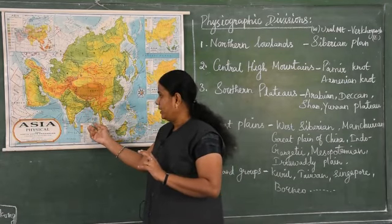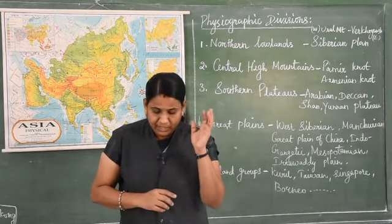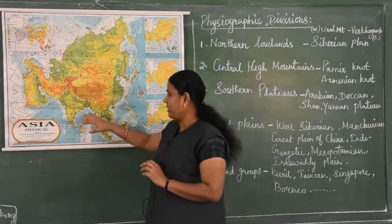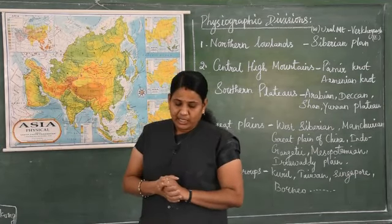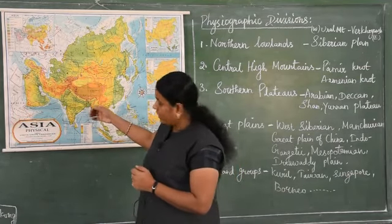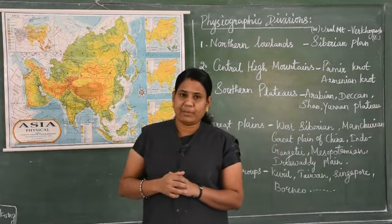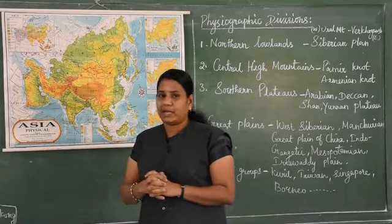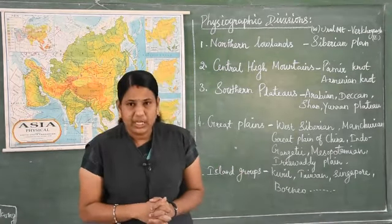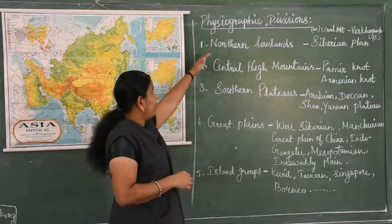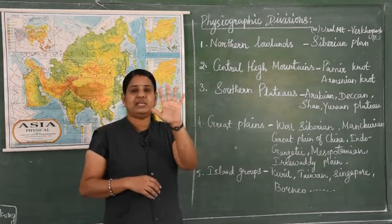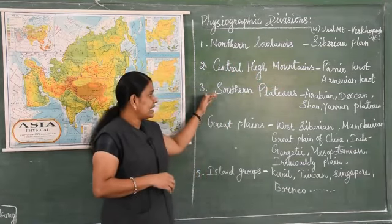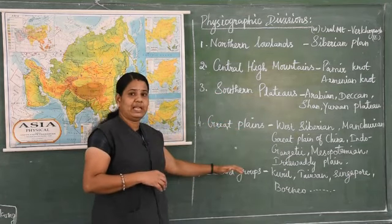If we see the Bay of Bengal, Bahrain in the Persian Gulf is located there. Sri Lanka is also located in the Bay of Bengal. Many archipelagos are located in Asia. So physiographic divisions are over. The five major physiographic divisions are northern lowlands, central high mountains, southern plateaus, great plains and the island groups.